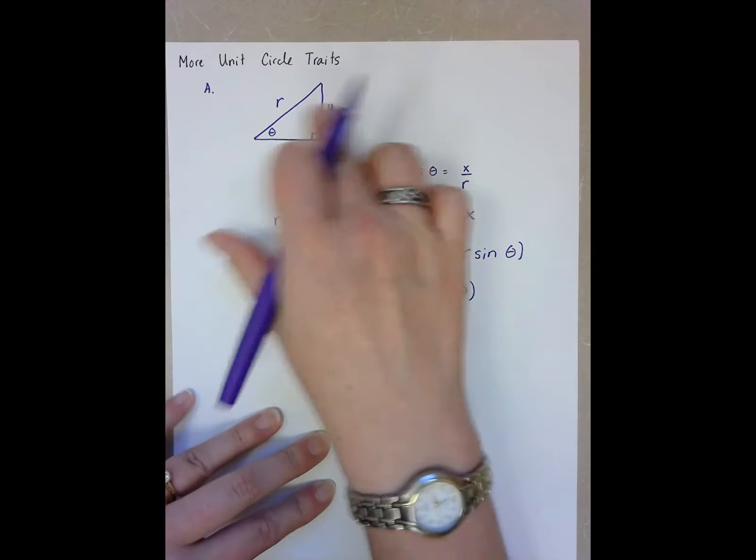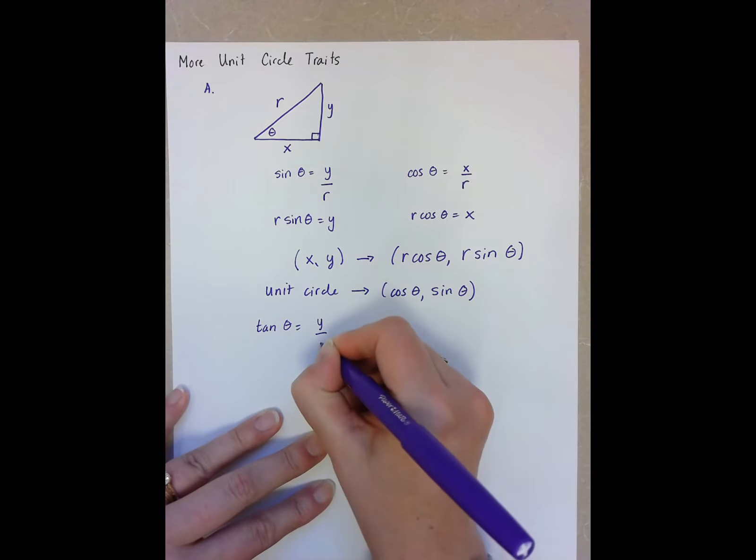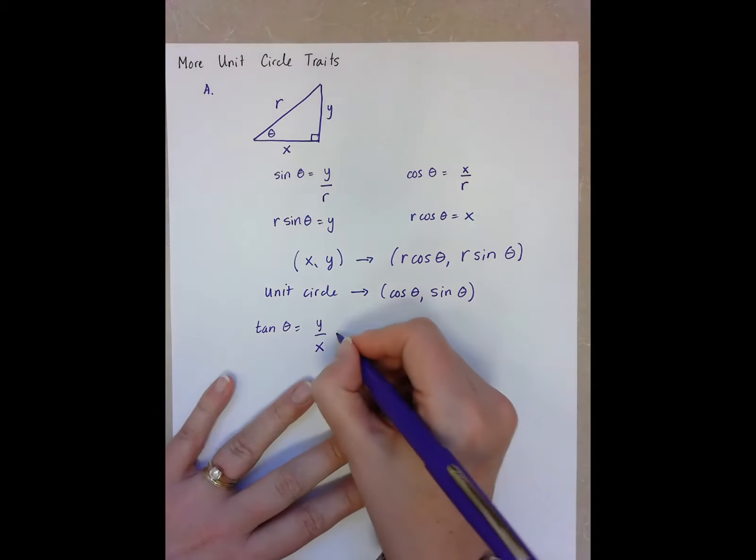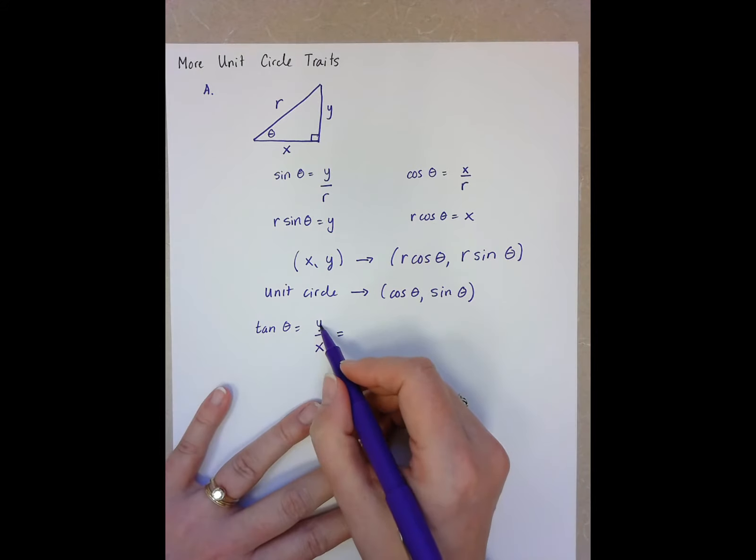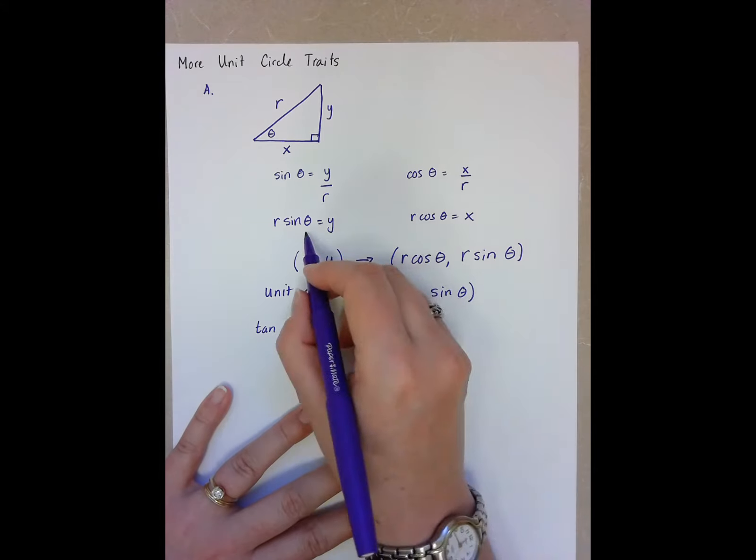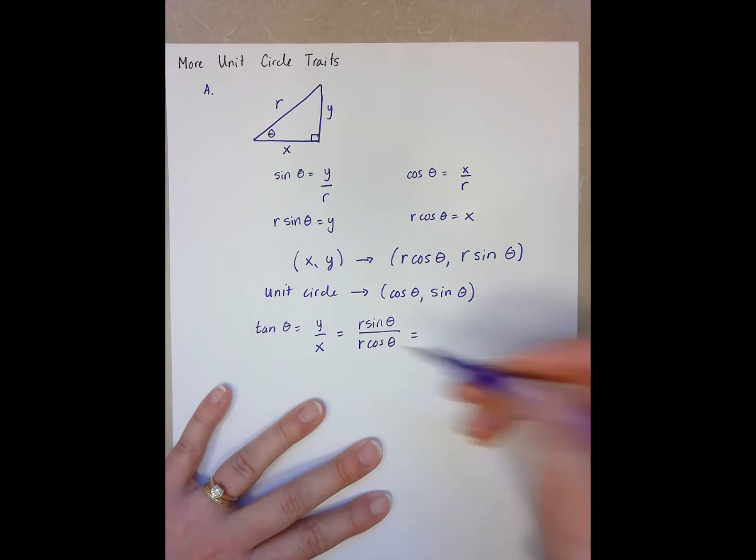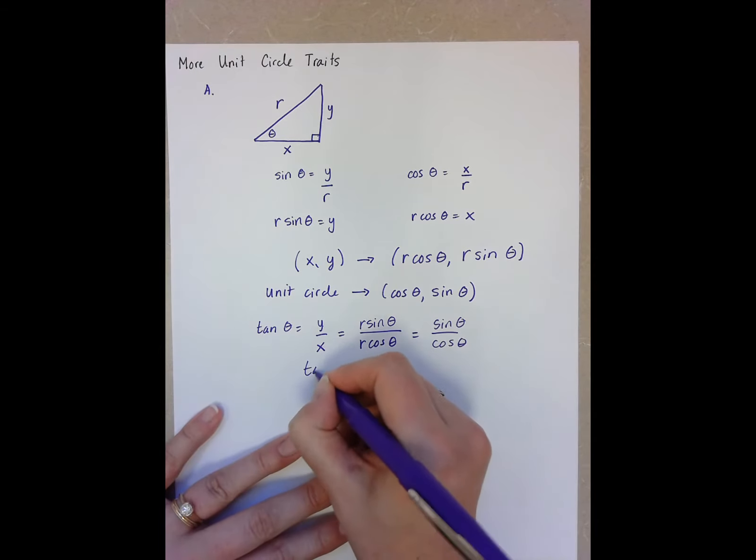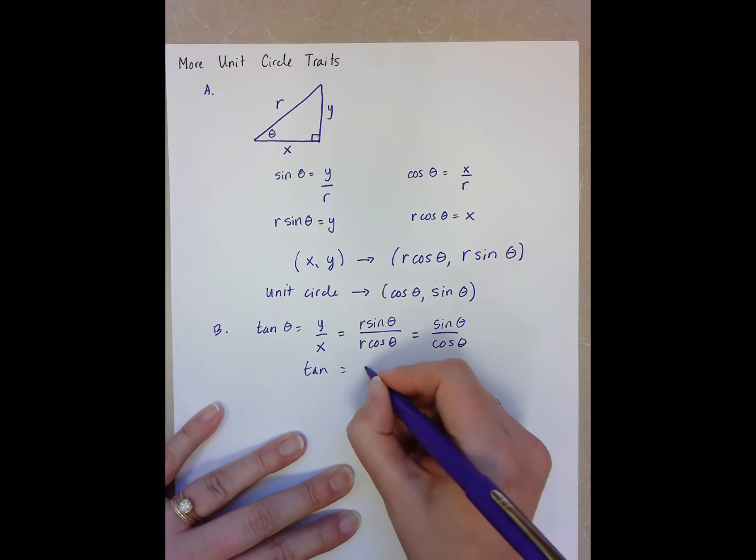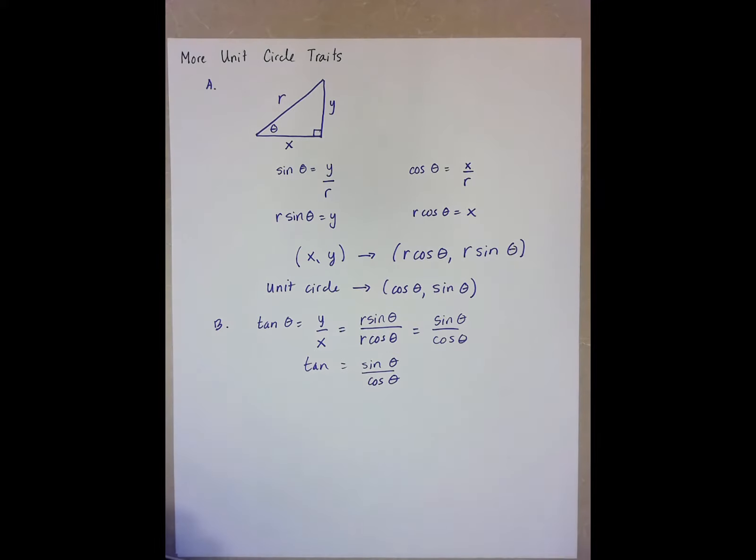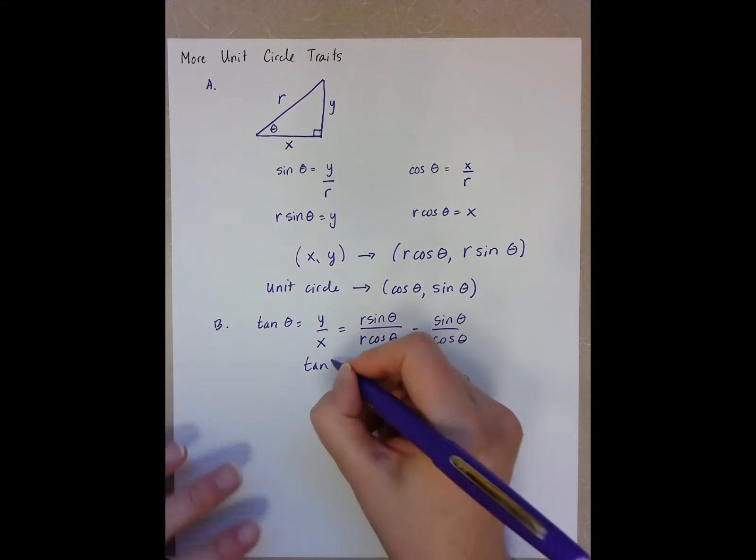so we're going to find tan theta also. So tan theta is opposite over adjacent. But now we know that y is r sine theta and we know x is r cosine theta. And because we're dividing by the same number, we now know that tan theta equals sine theta over cosine theta.